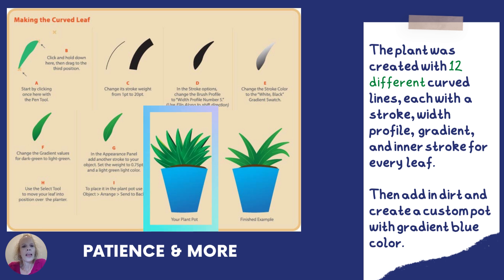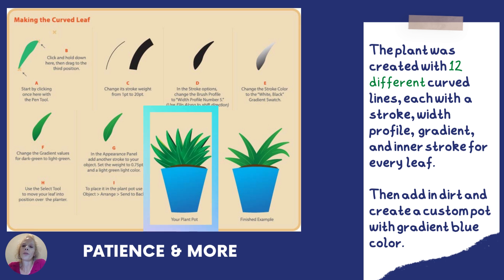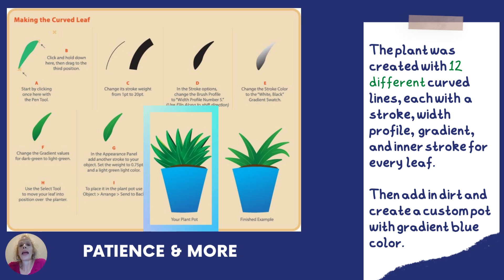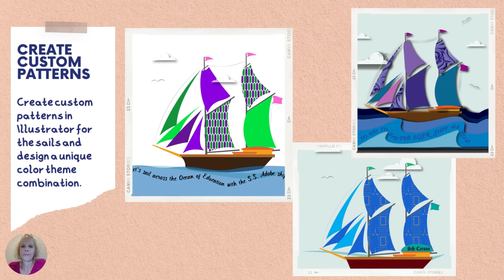Here's an example of the patience required. You might see a potted plant and think it looks great, but actually that's 12 different lines. Every line had to have the stroke weight changed, the brush profile changed, the color changed to a gradient of dark green and light green, and finally a second stroke added inside the leaf — and we had to do that 12 times, as well as create a pot, some dirt, and layer the leaves so it looks like they're planted behind the pot. Here, students created their own custom pattern, using color harmony in the color wheel to make coordinating sails for all of their ships.